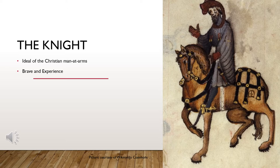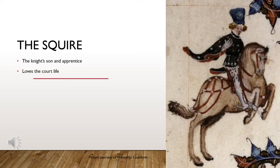The knight is in the ruling class, which makes sense because he's also the first person to tell his tale. He has been in about 15 crusades and is presented as brave and basically everything you would imagine a knight should be. The squire is actually the knight's son — he looks up to his dad, who is honorable, but the squire is all about dancing and flirting around.